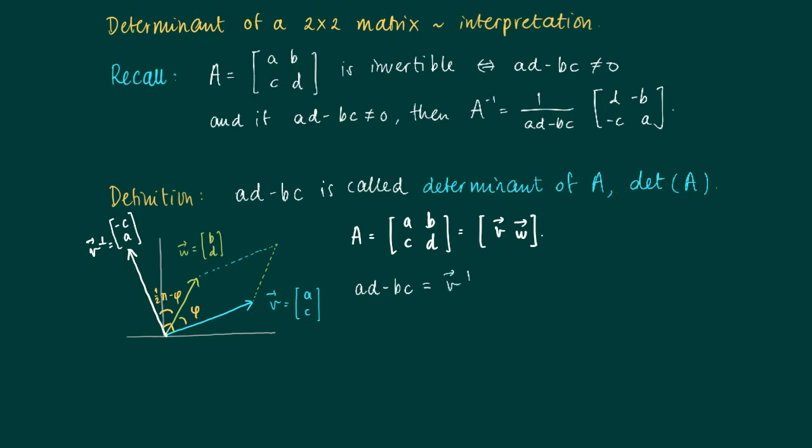Now look at ad minus bc. Well, this is the inner product of v perp with w. And we know that this is, using the definition of an angle between two vectors, the length of v perp times the length of w times the cosine of π/2 minus φ.